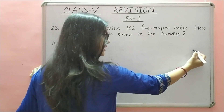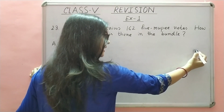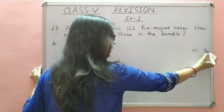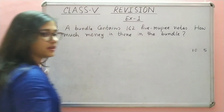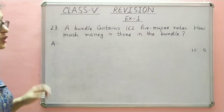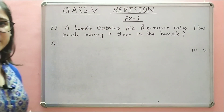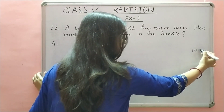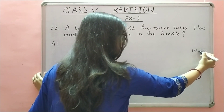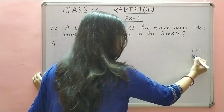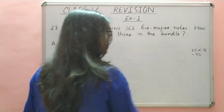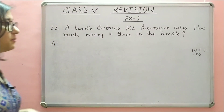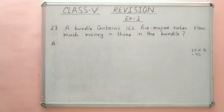Suppose, ek bundle mein 10 notes hai, jo ki 5 rupee ka hai. Toh kitna total money hoga us bundle mein? Kyase nikalayenge? Multiply kar denge. Toh kya ho jayega? 50. Toh is tarah se humi ye solve karenge.